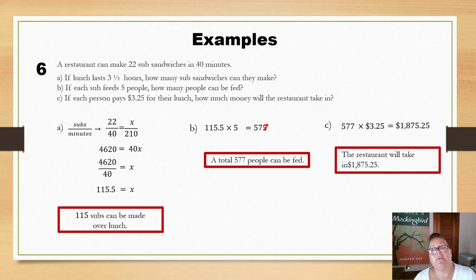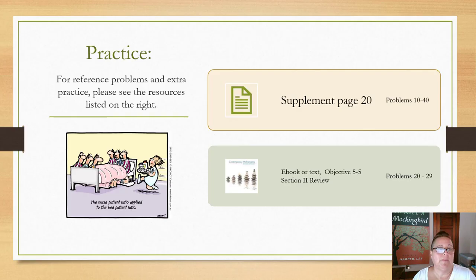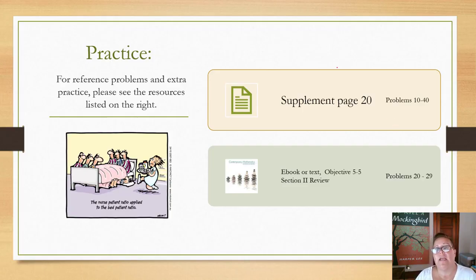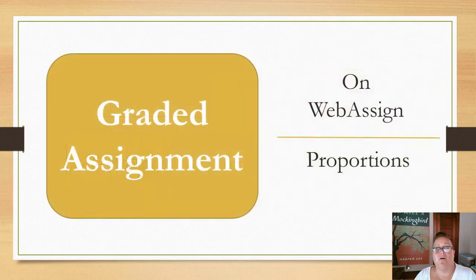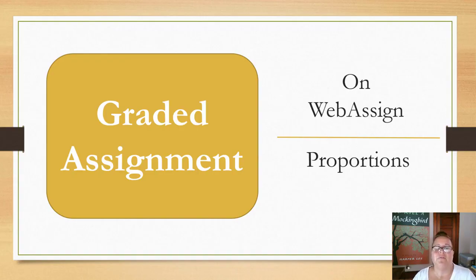For extra practice, you can find problems in your supplement on page 20, problems 10 through 40, as they all relate to proportions. Alternatively, in your ebook in objective 5.5, this is part of the chapter 5 section 2 review — look at problems 20 through 29. There is also a graded assignment on WebAssign called Proportions. If you have any questions, please feel free to contact your instructor or the math support personnel for the course.